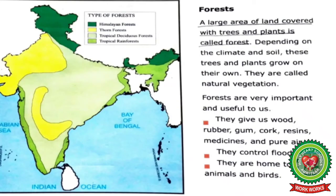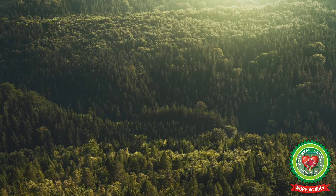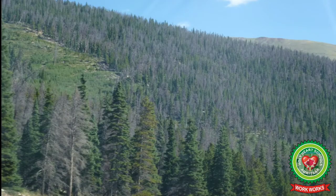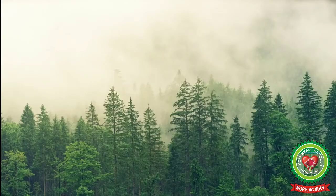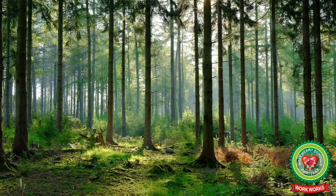From the book: a large area of land covered with trees and plants is called a forest. Depending on the climate and soil, these trees and plants grow on their own and are called natural vegetation. Trees and plants produced naturally without human aid, left undisturbed for a long period of time, are known as natural vegetation.